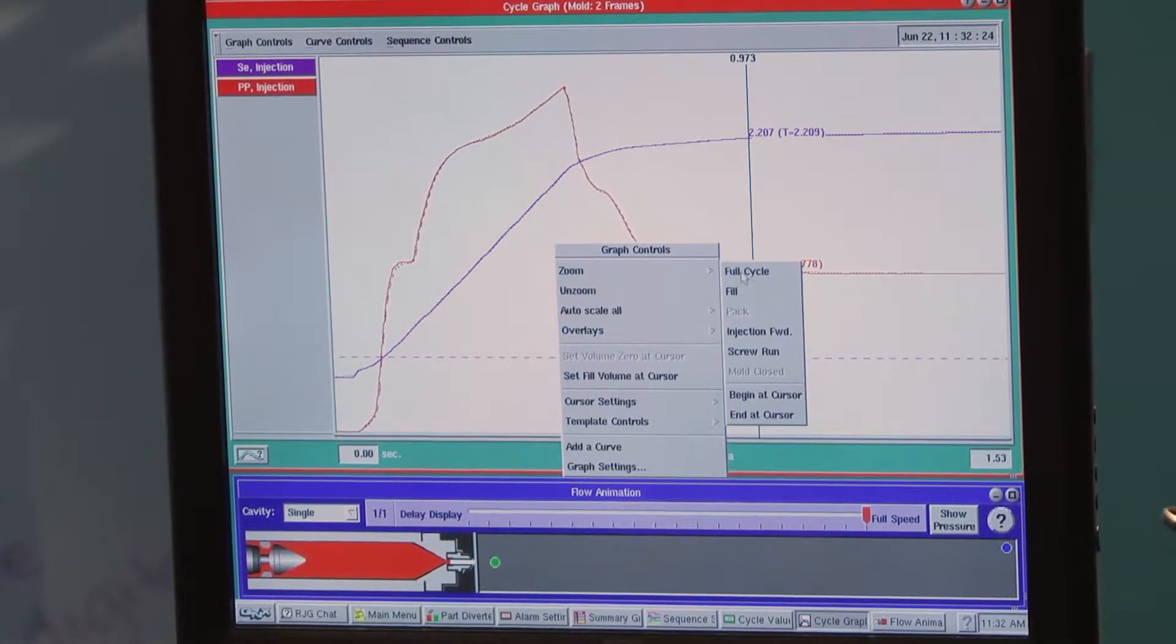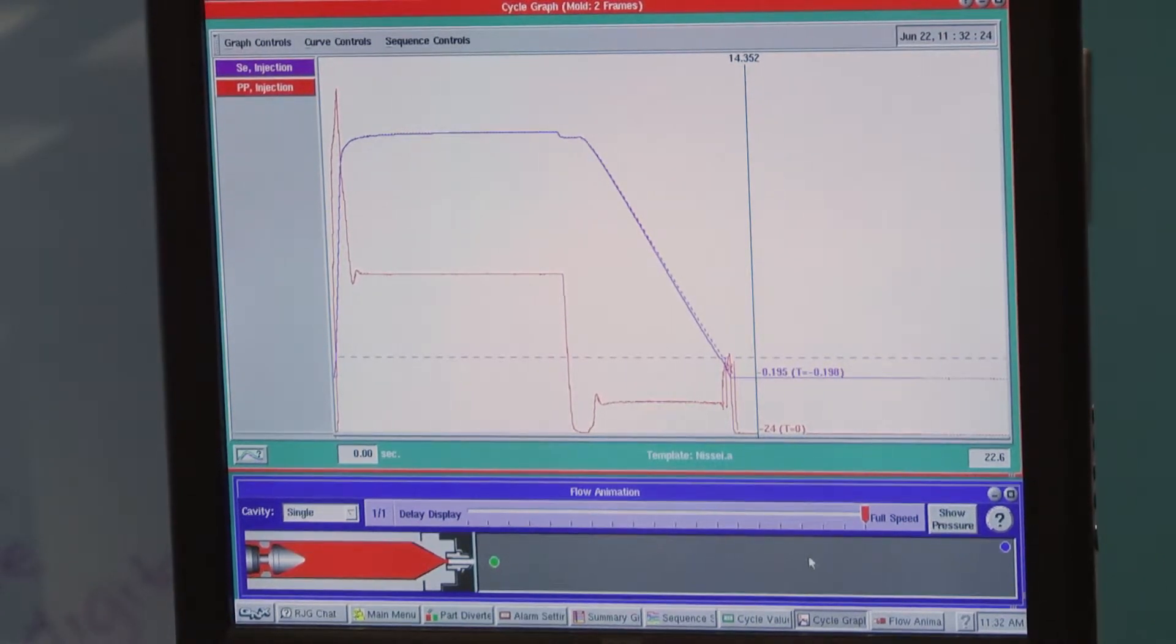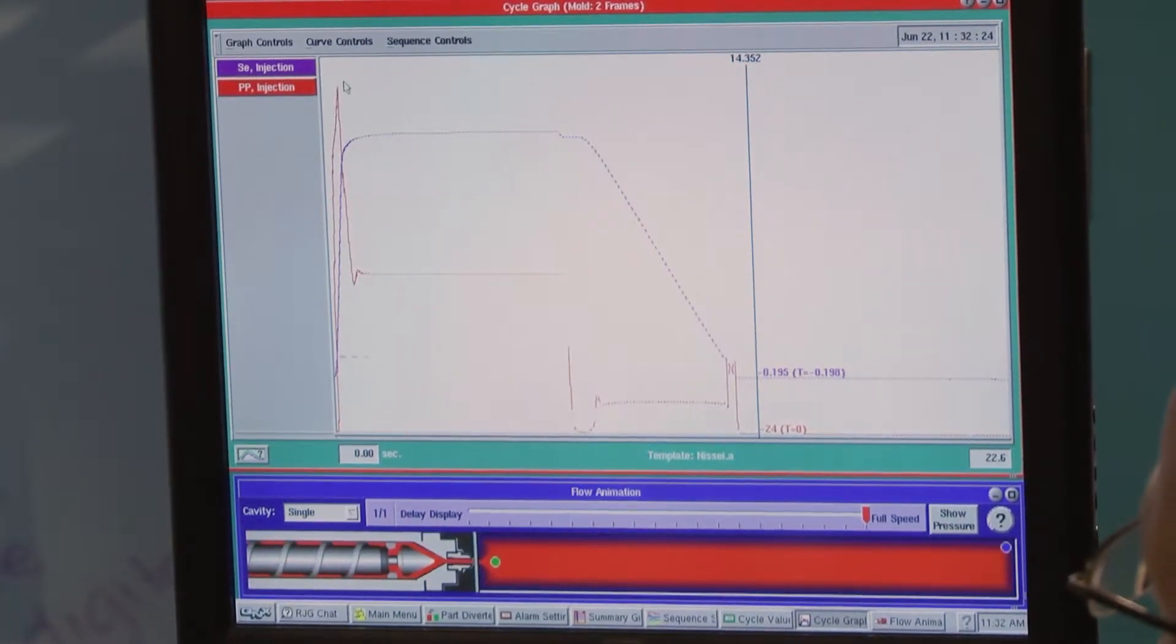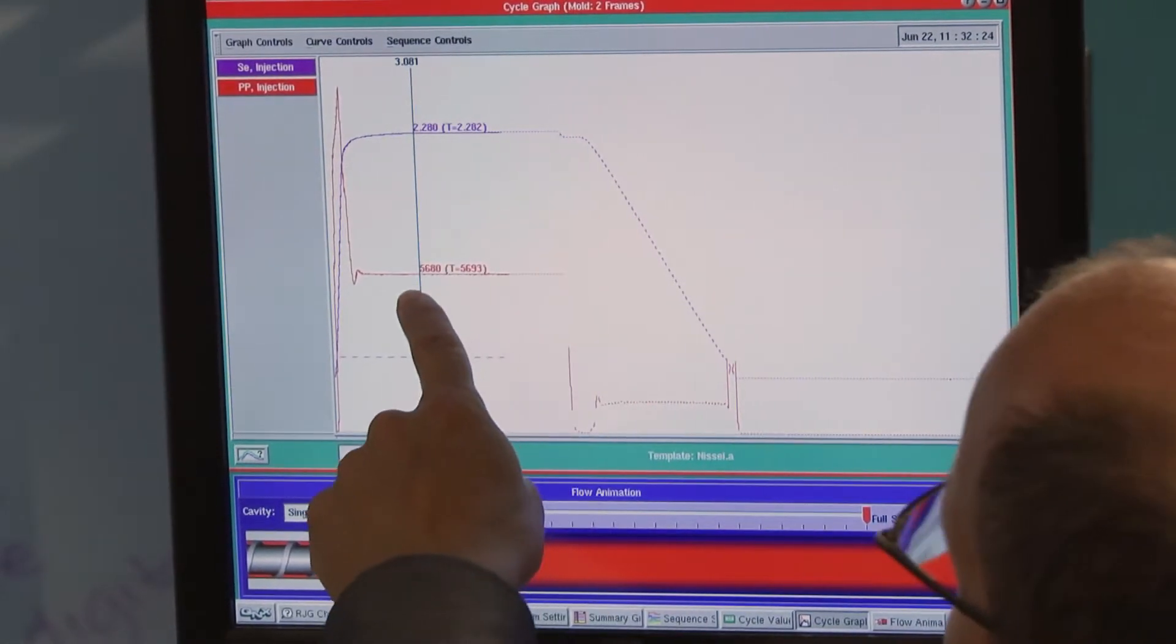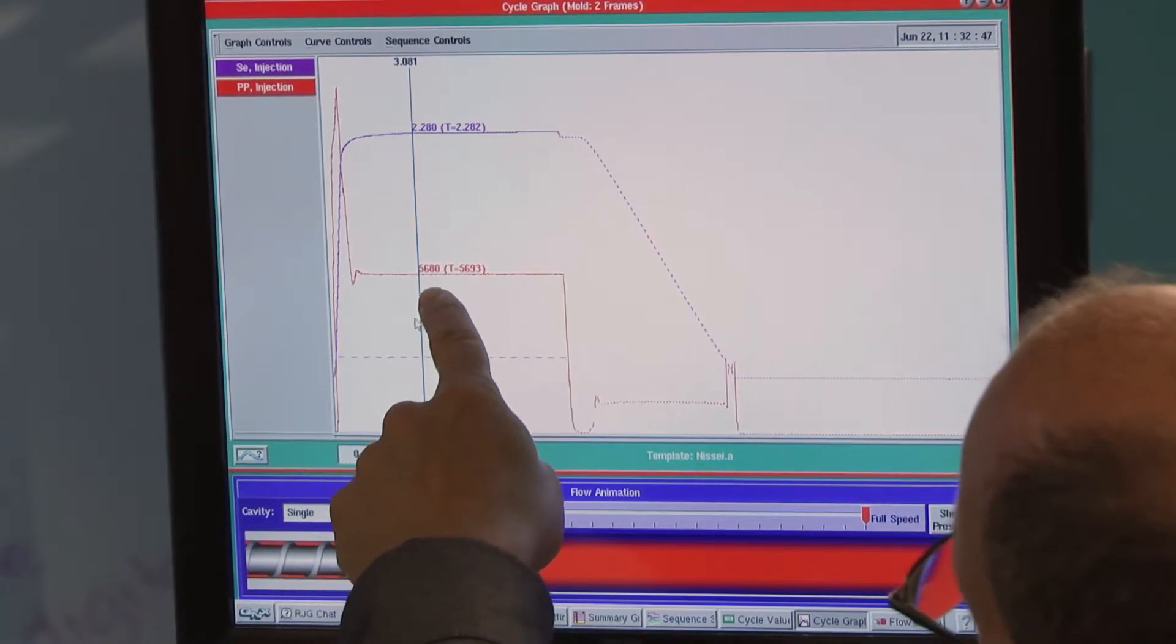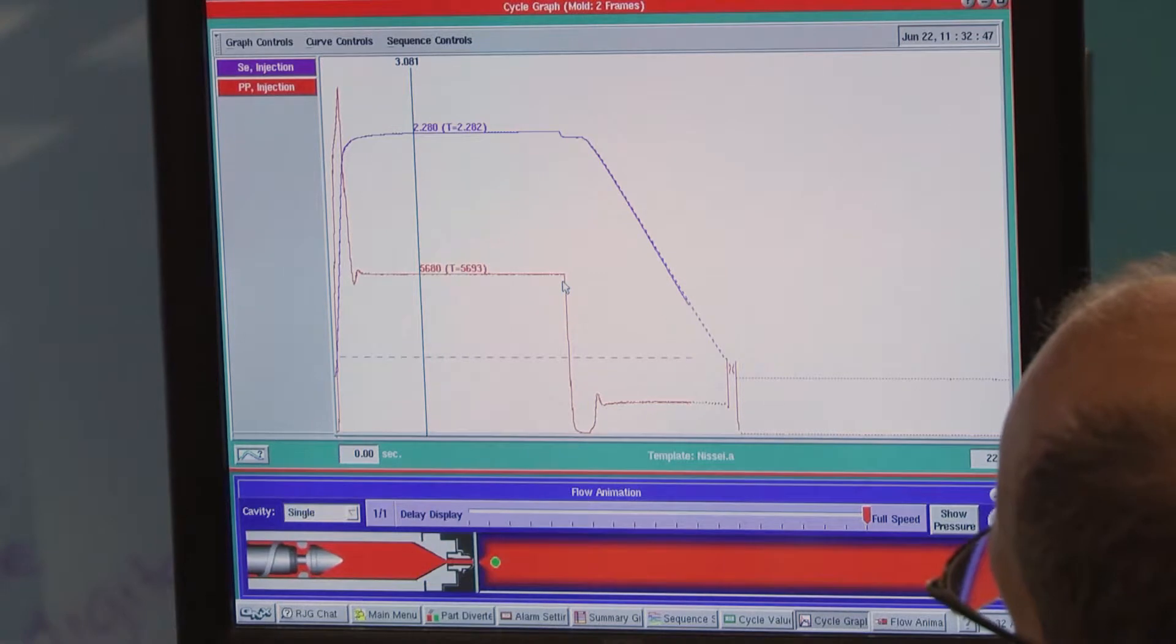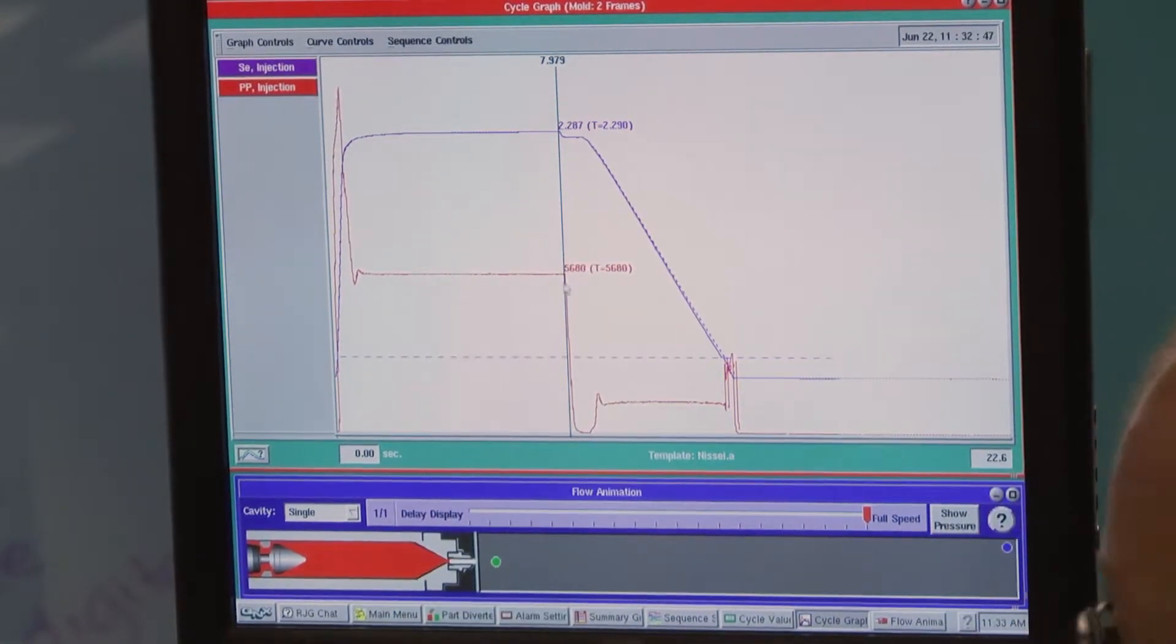Let's go ahead and zoom out to full scale again. This is 0 to 22 seconds. We can see fill pack, our hold pressure is very stable. We can see that we're running right around 5,600 PSI hold pressure. We can tell our hold time, our injection forward time, is right around 8 seconds.